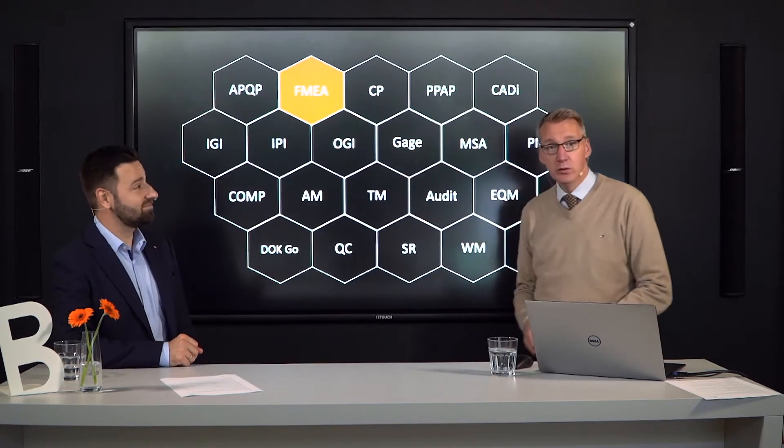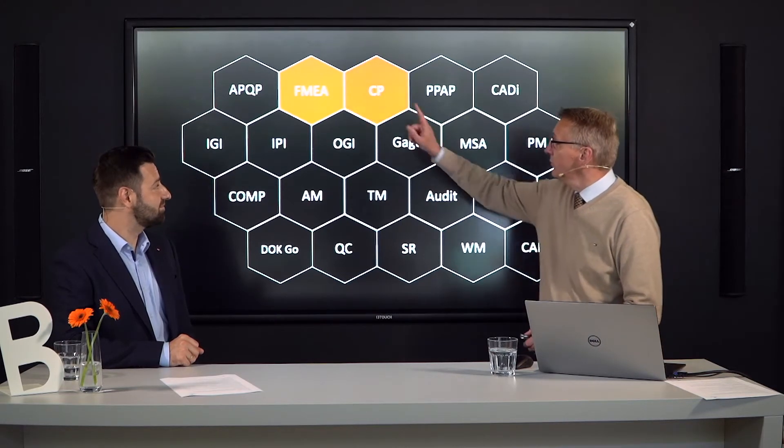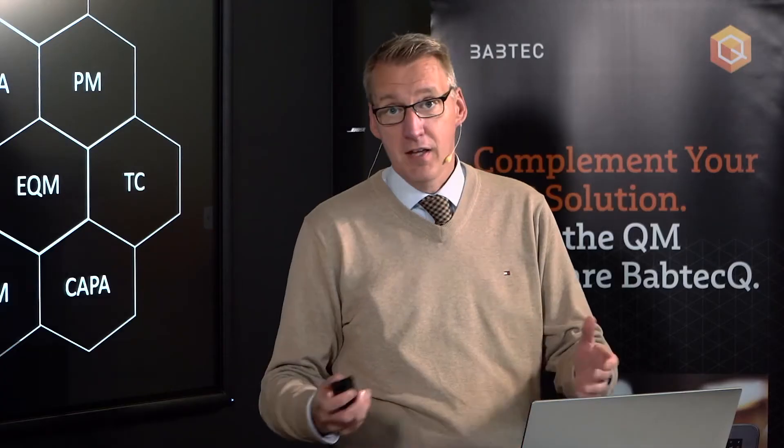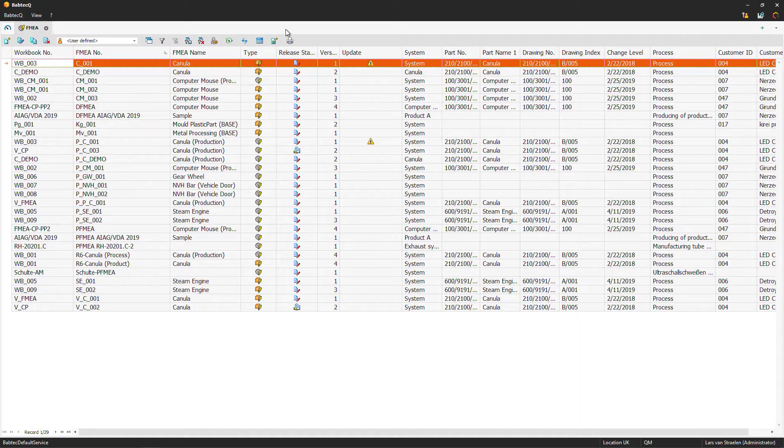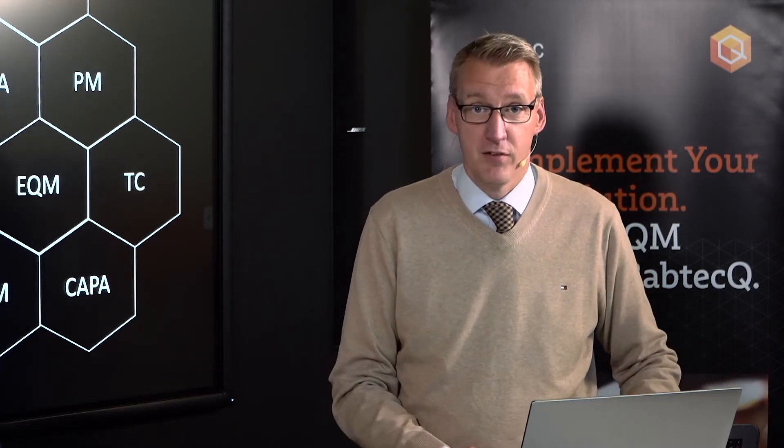Hello and welcome! Today we will take a look at our FMEA module, and after we have seen the FMEA module, we will directly jump into the control plan module. These are the topics for today. We start as usual: open the module tab, type in FMEA, hit enter, and jump directly into the FMEA module. What you can see here is the FMEA module itself — it is the main module inside the Babtec software.